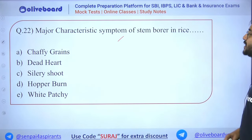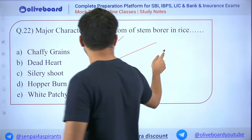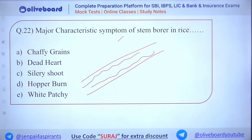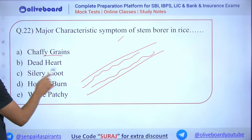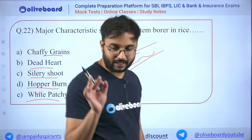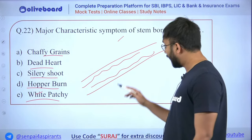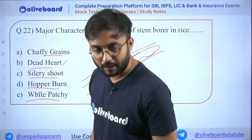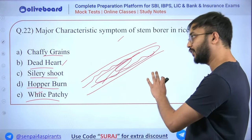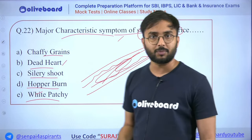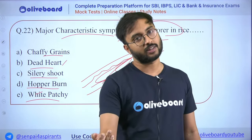Next: major characteristic symptom of stem borer in rice — chaffy grain, dead heart, ciliary chute, hopper burn, or white patches? Stem borer bores from inside the stem and destroys it. The answer is dead heart — the stem is destroyed from inside causing the dead heart symptom.